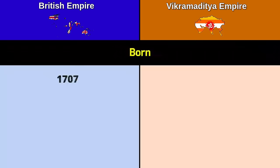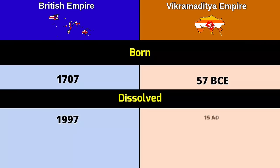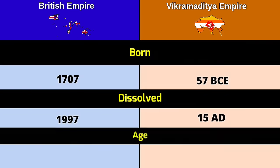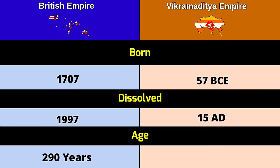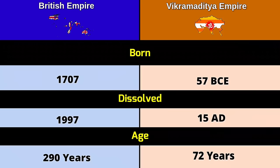Born: British Empire 1707, Vikramaditya Empire 57 BCE. Dissolved: British Empire 1997, Vikramaditya Empire 15 AD. Age: British Empire 200 years, Vikramaditya Empire 72 years.